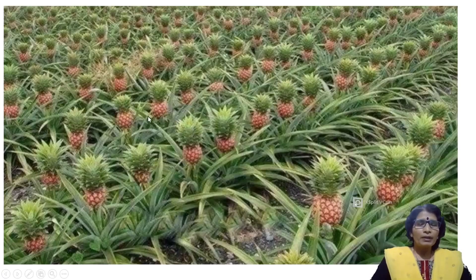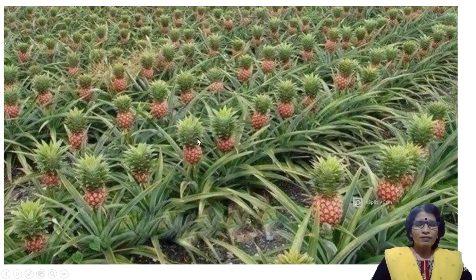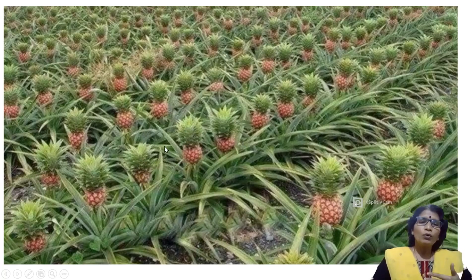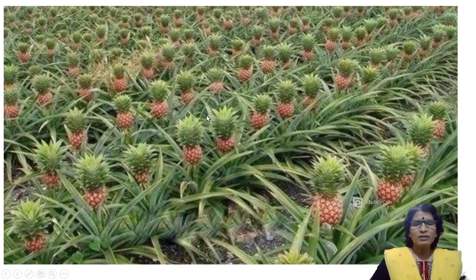Pineapple plants normally take more time for flowering. But by spraying ethylene, flowering can be initiated, so all the pineapple plants flower at the same time. As a result, fruit formation is also completed at once, and the farmer can harvest the complete crop at once and shift it to the market, saving transport charges.